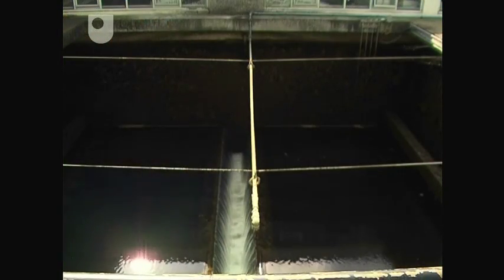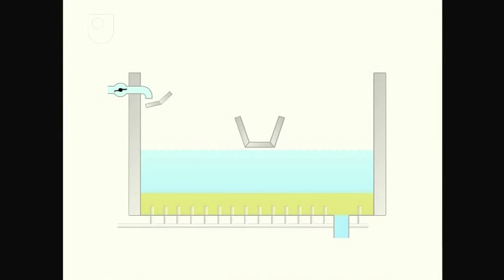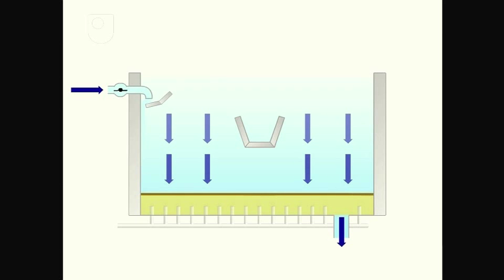This one's partially empty so that you can see the outflow trough, which is an important part of the maintenance routine. Though normally, the tank is full. Sand in the bottom of the filter acts as a strainer to remove any remaining solid matter from the water.